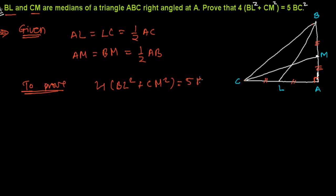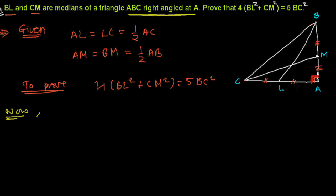We need to prove 4BL² + 4CM² = 5BC². The plan is to find BL² first, then CM², add them together and check whether we get 5BC². Also, the fact that the triangle is right-angled at A is important — it means we can apply the Pythagorean theorem in triangles AMC, ABL, and ABC.